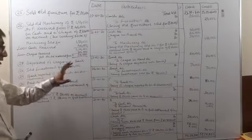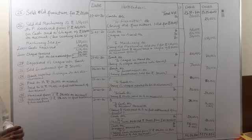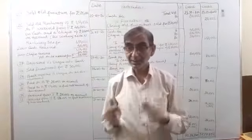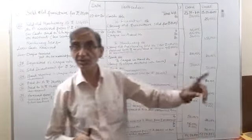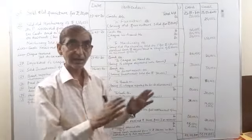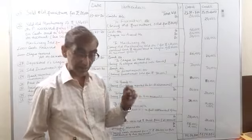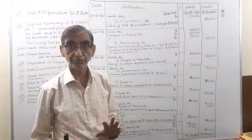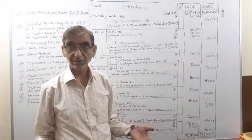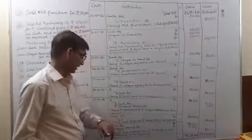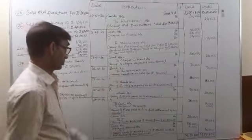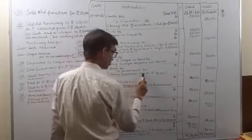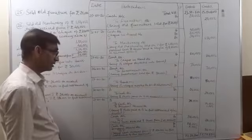Transaction 28: sold investments for rupees 30,000. When investments are purchased, bank account is credited. When investments are sold, the money is directly deposited into the bank as per the modern system of dealing in securities — everything is done online. So bank account debit rupees 30,000, to investment account 30,000. Narration: being investment sold for rupees 30,000.